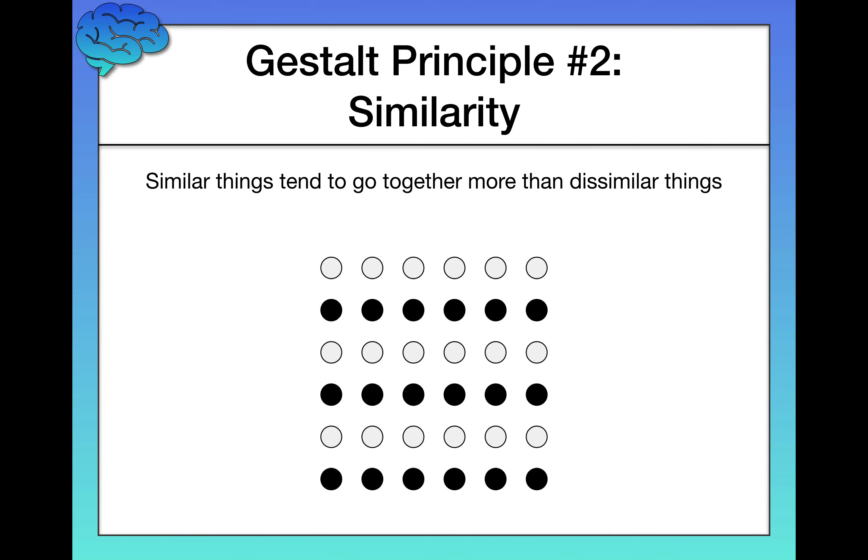Similarity states that similar things tend to go together more than dissimilar things. So chances are in this image here, you're not seeing one big rectangle anymore, right? Chances are you're seeing lines because I've basically altered the color such that I make lines, horizontal lines, similar to one another.